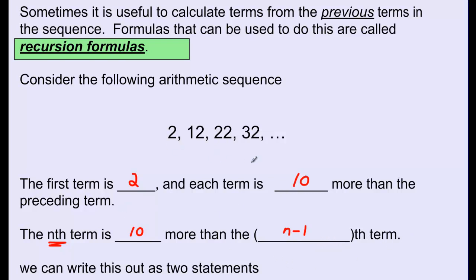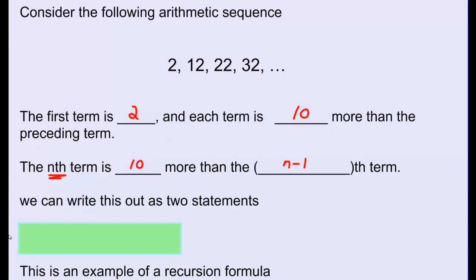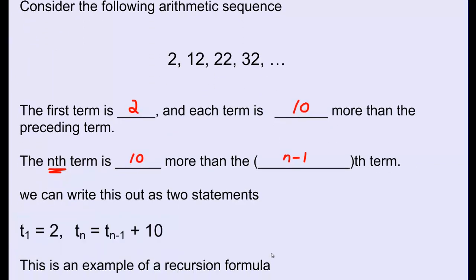We can now rewrite a formula for the sequence 2, 12, 22, 32 using the knowledge that each term is 10 more than the term before it. We write: T1 equals 2, and Tn equals Tn minus 1 plus 10. This reads: the nth term is equal to the term before it plus 10. We call this an example of a recursion formula, or a recursive sequence.